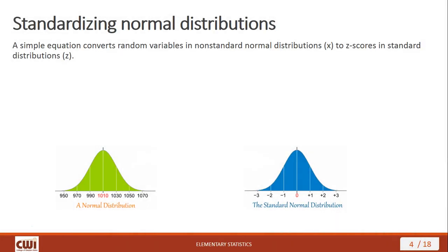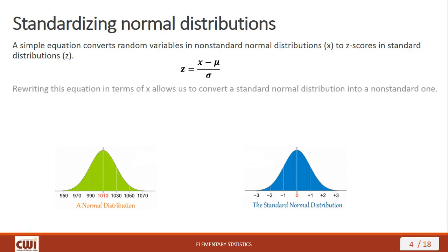Let's look at this process for standardizing normal distributions. There's a simple equation that converts random variables in non-standard normal distributions to z-scores in standard distributions, and it's the same z-score equation we've seen before. We take the random variable, subtract out the mean, divide by the standard deviation, and that gives us a z-score, which standardizes our normal distribution. If we rewrite this equation in terms of x, we can convert back the other way — from a standard normal distribution back to a non-standard one.